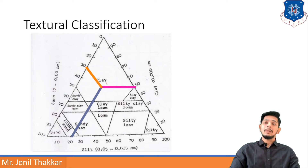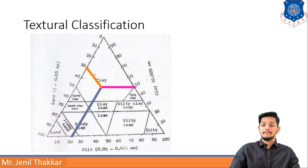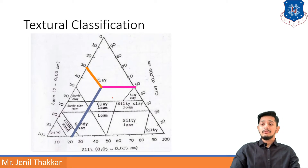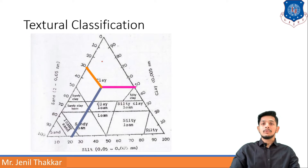The triangle is divided into different regions: clay, sandy clay, sandy clay loam, loamy sand, sand, sandy loam, loam, silty clay loam, silty loam, silty clay, clay, and so on. To decide which type a soil belongs to, we plot lines based on the percentages. For example, if the soil has 30% sand, we start by locating 30 on the sand axis.